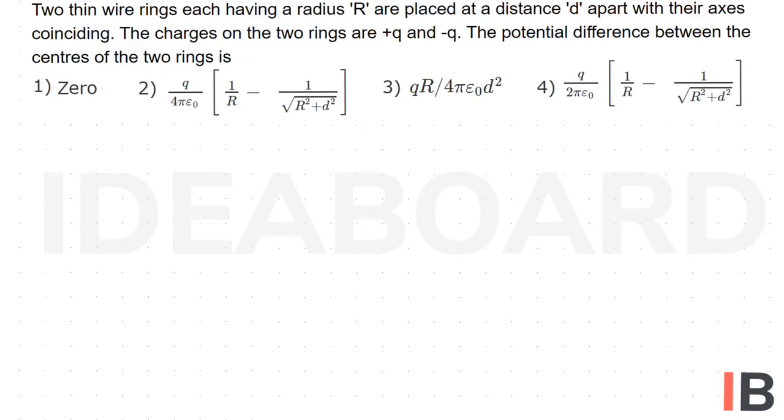In the given question, we know electric potential due to a point charge V is equal to 1 by 4πε₀ into q by r.